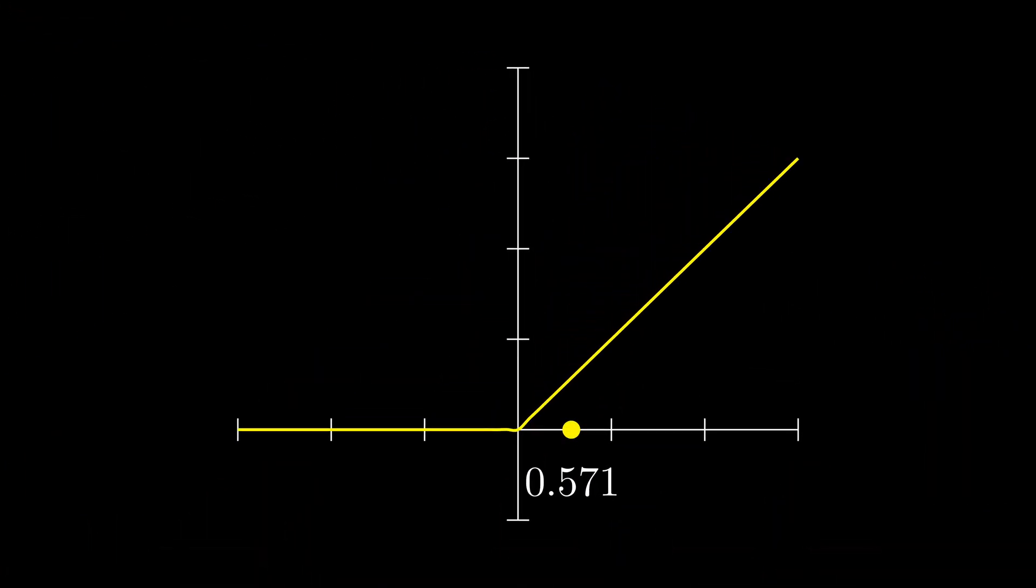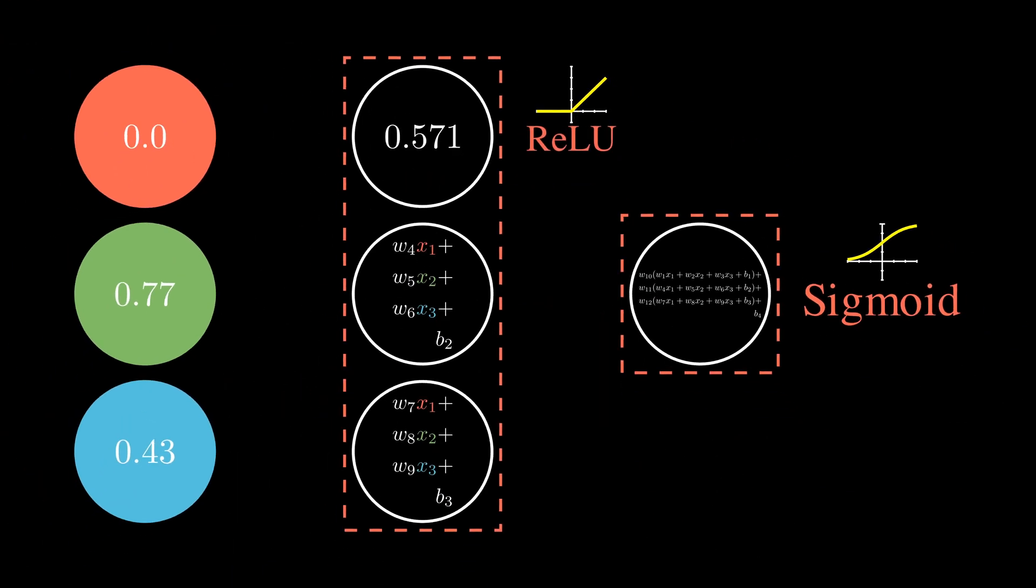The ReLU function simply takes negative values and turns them to zero. If they are positive, it just leaves the value alone. We repeat this process for every other hidden node. We pass forward the scaled RGB values for that given background color. Those are going to be multiplied with the unique respective weights for that given hidden node associated with each input node.